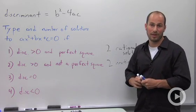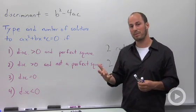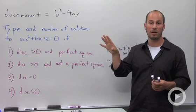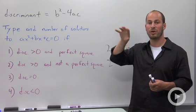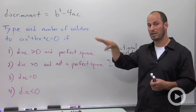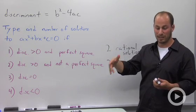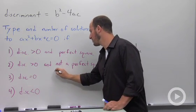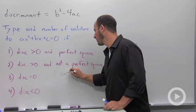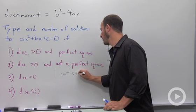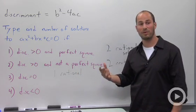Discriminant is equal to zero. What that does in terms of our quadratic formula is it makes that whole square root go away. You have plus or minus the square root of zero, which disappears, and we're just left with negative b over 2a. So in this case we have one rational solution.